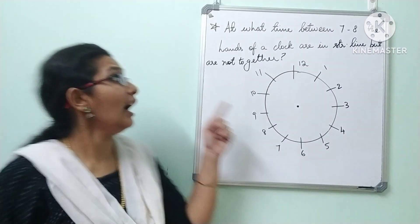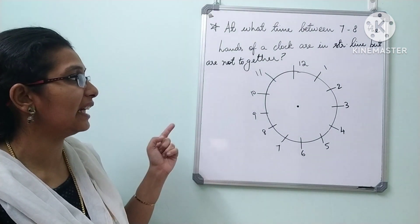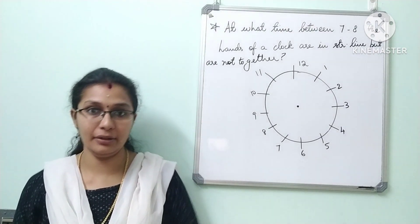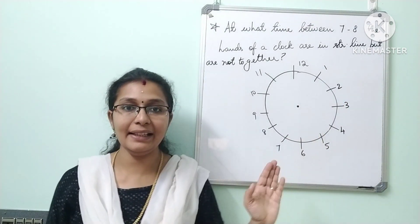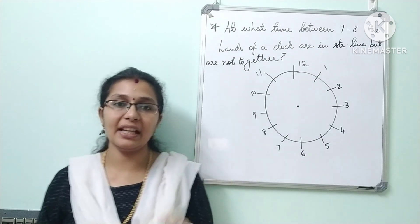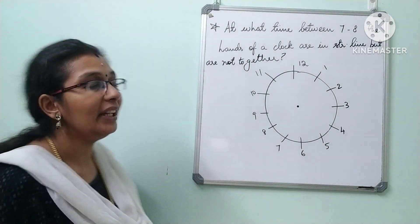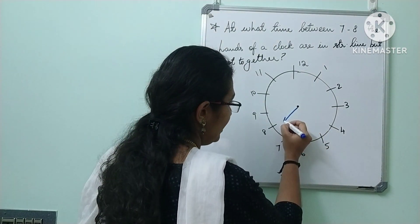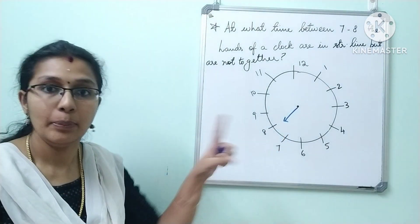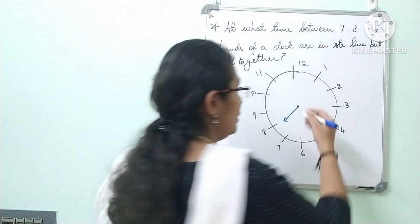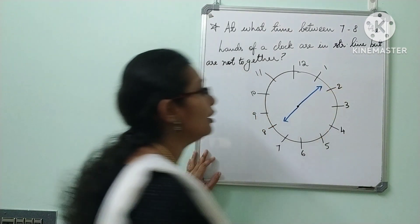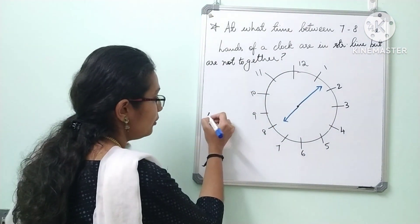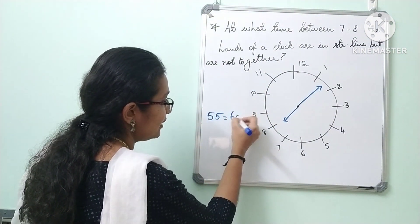Second question: at what time between 7 and 8, the hands of a clock are in a straight line but are not together? We will take the opposite direction. From 7 to 8, we take the hour hand. The minute hand drops to the opposite here. Every minute covered — 5 minute spaces. So 55 minute spaces in one hour, 5 minute spaces.